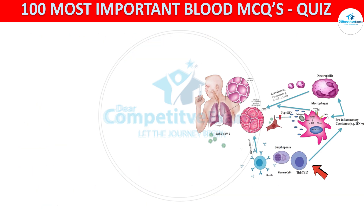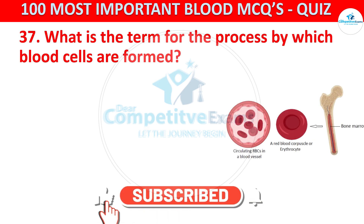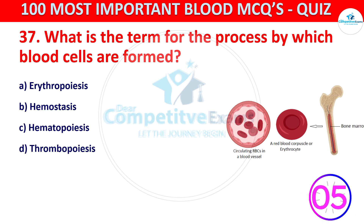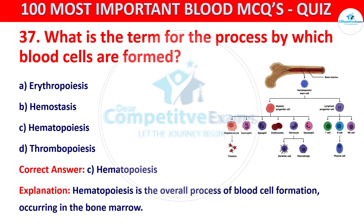Question number 37. What is the term for the process by which blood cells are formed? Your options are erythropoiesis, hemostasis, hematopoiesis, or thrombopoiesis. The correct answer is C, that is hematopoiesis. Hematopoiesis is the overall process of blood cell formation occurring in the bone marrow.